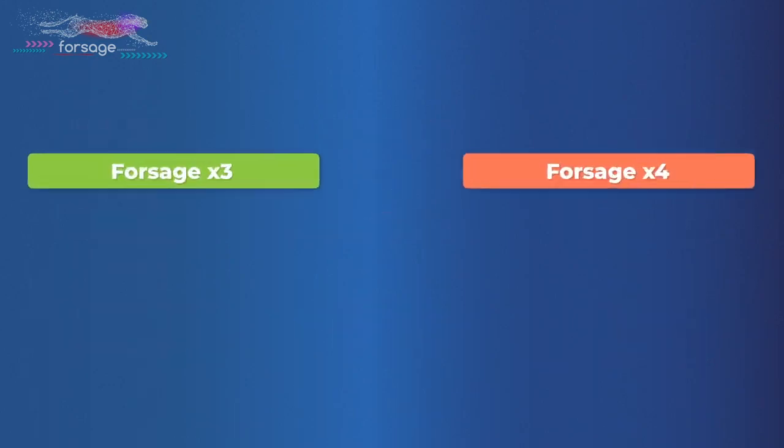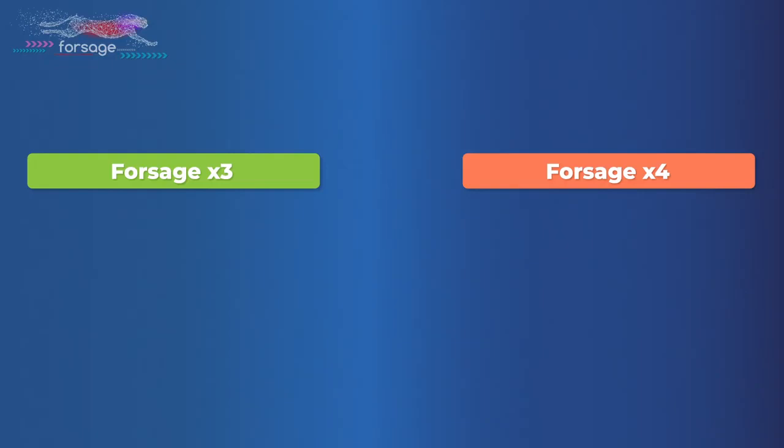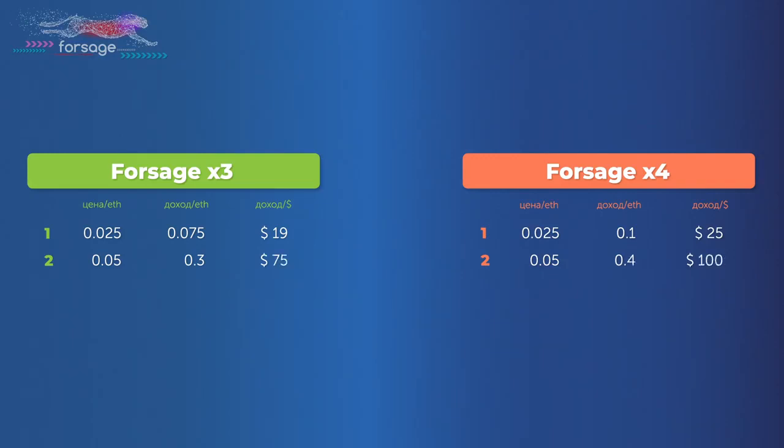For example, in the first week you went through a circle of the first level slot. At X3 your income is 0.075 ETH, and at X4 0.1. In the second week you went through a circle of second slot, and the first slot you went one more circle. And the income is already 0.3 plus 0.4 ETH.